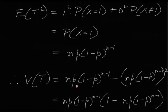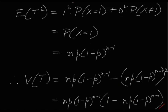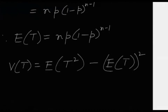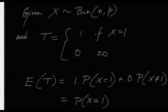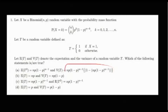Therefore, Var(T) = n·p·(1−p)^(n−1) − [n·p·(1−p)^(n−1)]², which factors as n·p·(1−p)^(n−1) · [1 − n·p·(1−p)^(n−1)]. We have found E(T), E(T²), and Var(T). Option C is true; option D is not true. Since E(T²) equals E(T) and we have Var(T) as computed, options A and C are the correct answers.